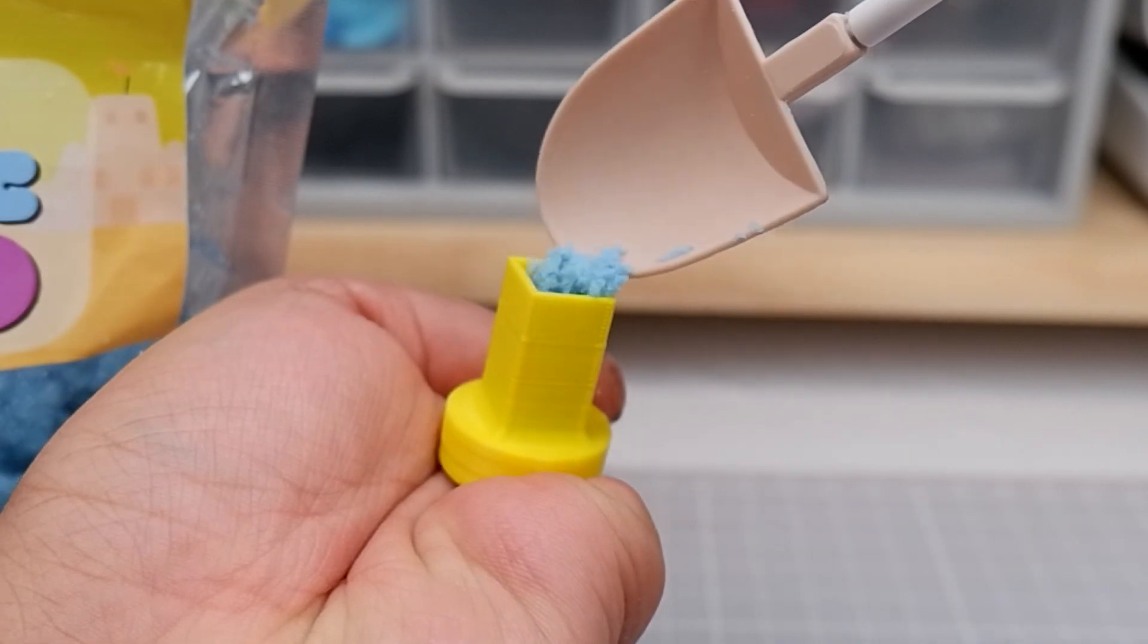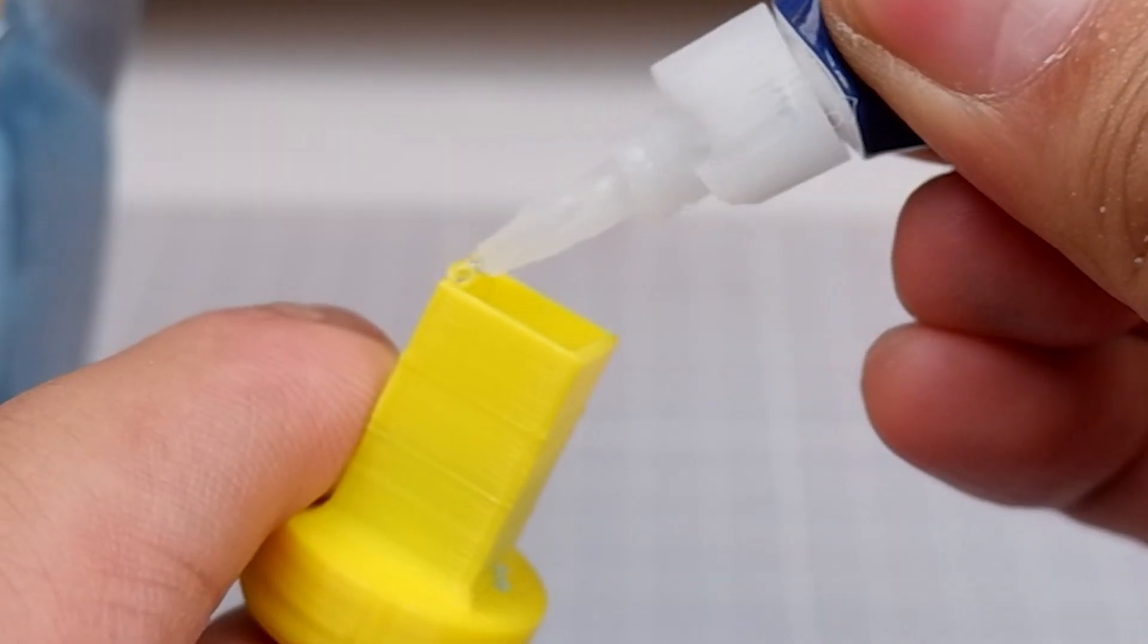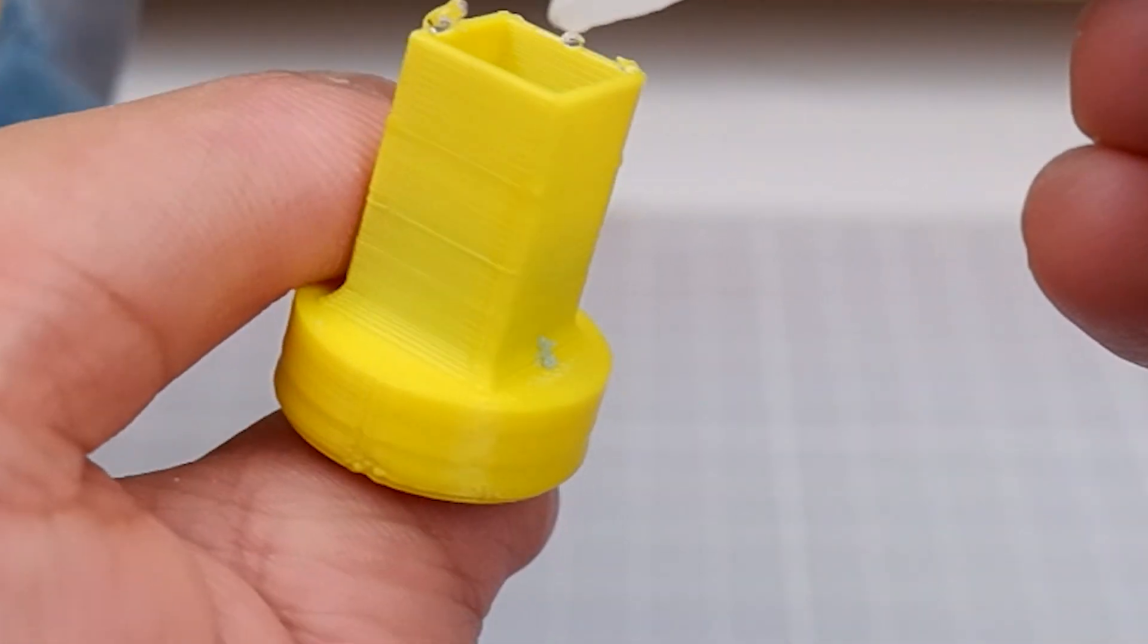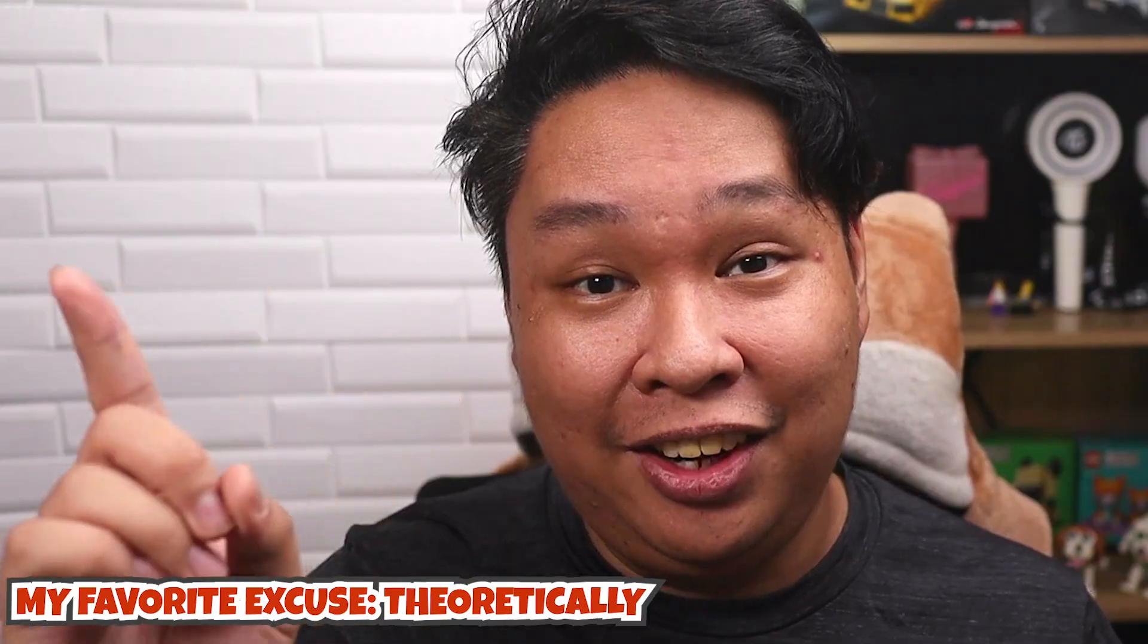Just pour some of the kinetic sand in here and then put glue on this part being careful not to get any on the sand. The verdict is still out on whether or not this actually works at such a small scale. But theoretically, it should work. Theoretically.